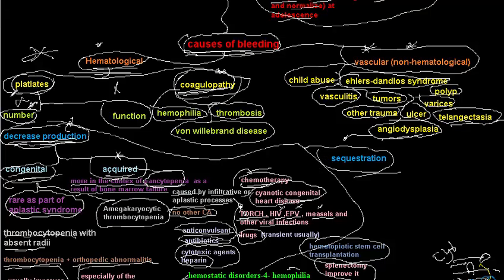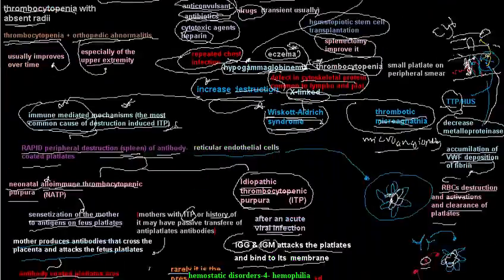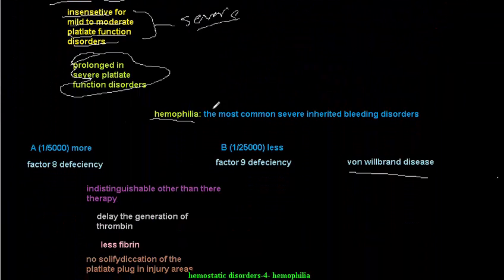In the previous two videos, I talked about platelet disorders related to causes of bleeding. The causes of bleeding are hematological and non-hematological. Non-hematological causes are vascular, while hematological causes relate to either primary hemostasis involving platelets, secondary hemostasis, or coagulopathy. Having covered platelet disorders, I'll now move to secondary hemostasis disorders related to coagulopathy, which are divided into three groups: hemophilia (related to clotting factors 8 and 9), von Willebrand disease, and thrombotic diseases.